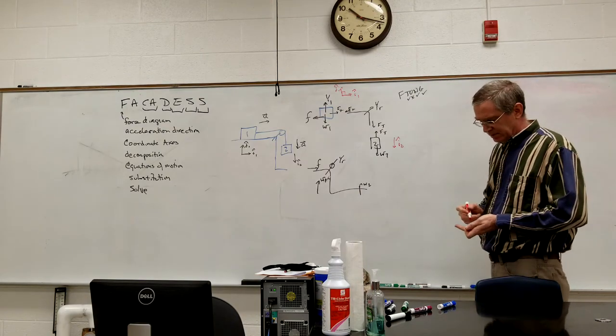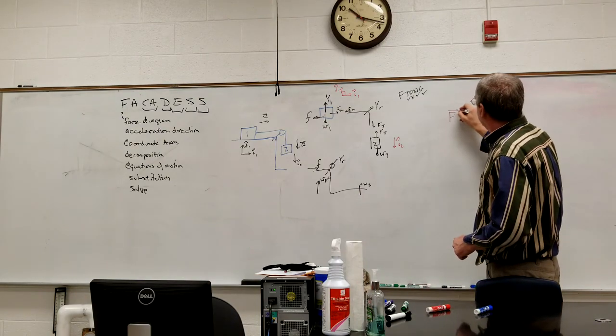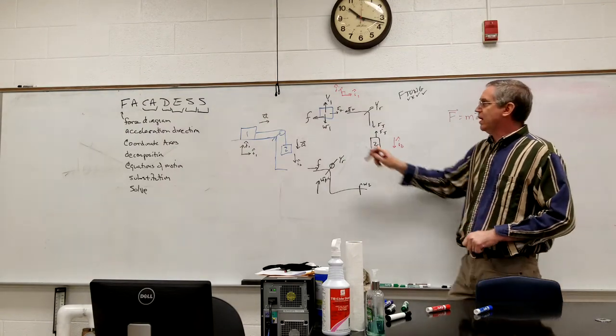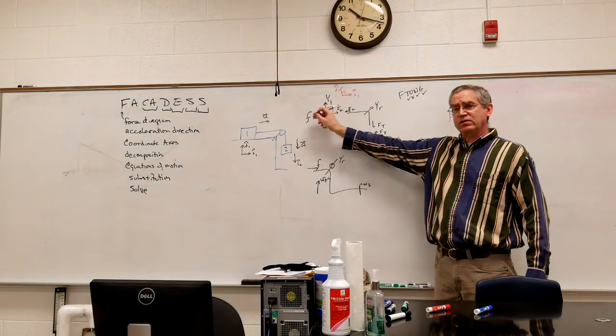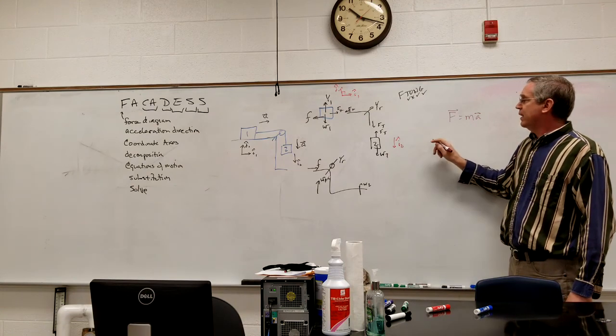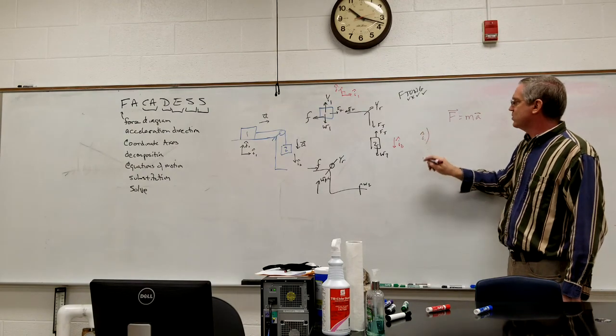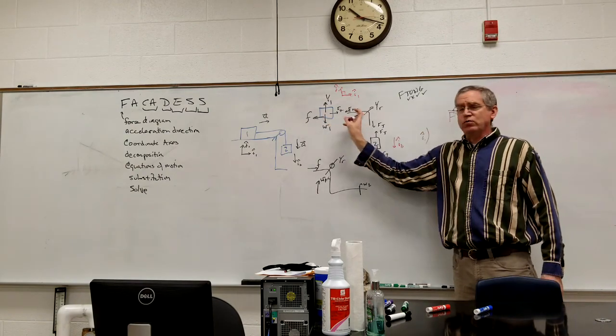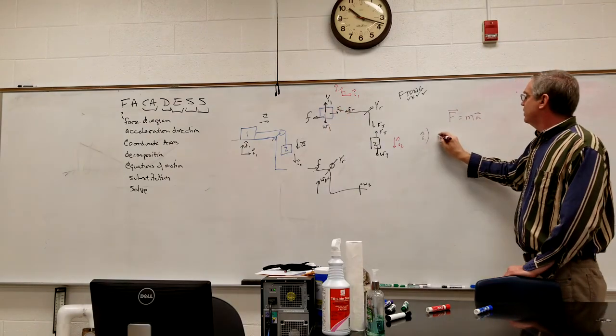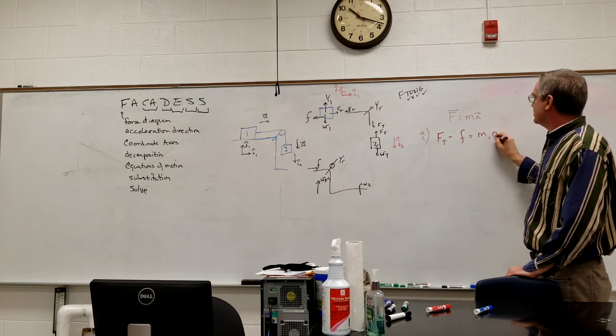Equations of motion become a lot simpler now. F equals M A, it's my starting point. I'm going to have three equations of motion. I'm going to have two from this one because this has two directions, and I'll have one from this one because I have only one direction. So let's do my I one hat equation first. Well, I have only two forces along that line, and so I have tension minus friction is equal to mass one times acceleration.